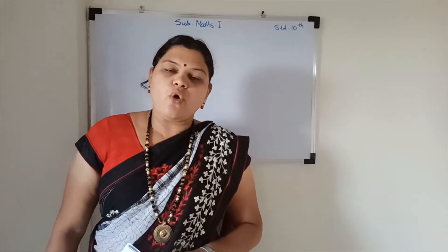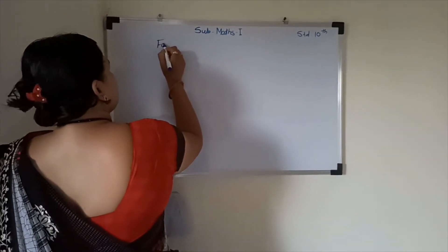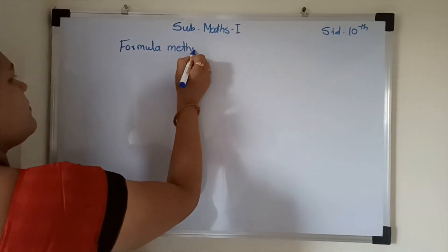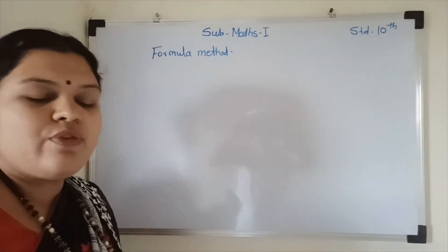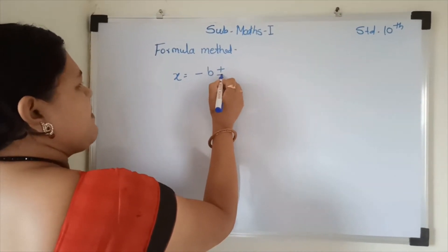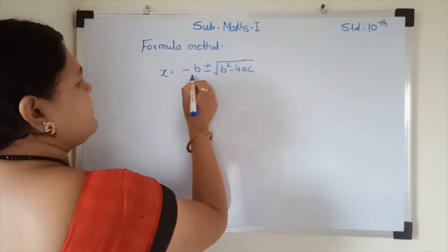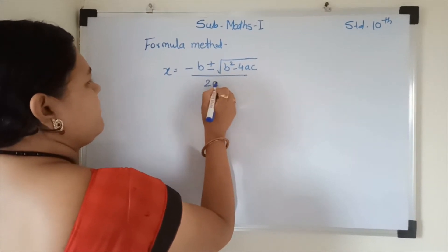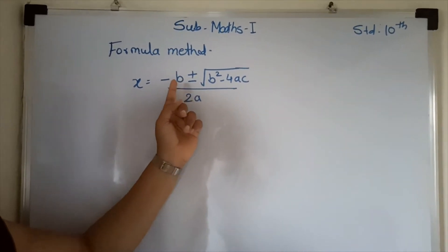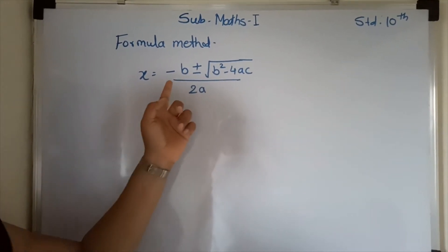Good morning students. Today we solve quadratic equations by the formula method. This is our third method. For this we use the formula: x is equal to minus b plus minus under root of b square minus 4ac upon 2a.